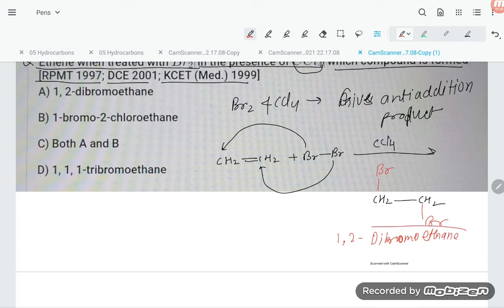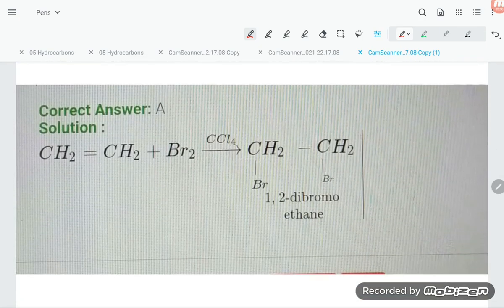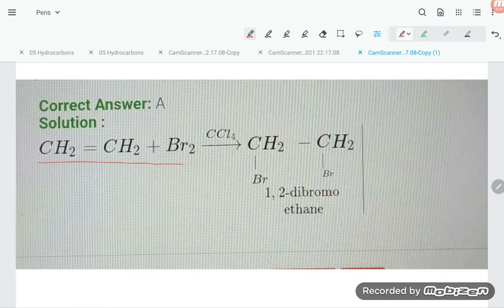Which is the correct answer? This is wrong, this is wrong, chloro is wrong. 1,2-dibromoethane - the correct option is option number A. So keep in mind: CH₂-CH₂ treating with Br₂ in CCl₄ gives 1,2-dibromoethane.